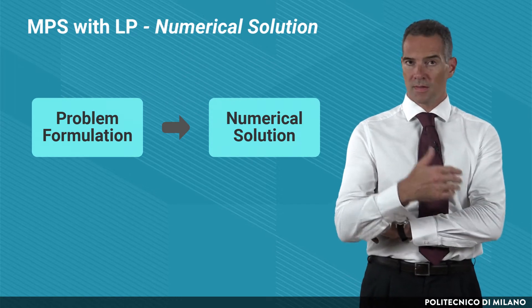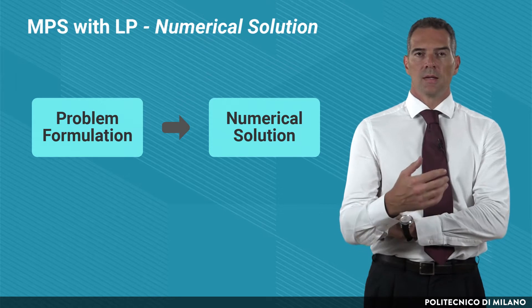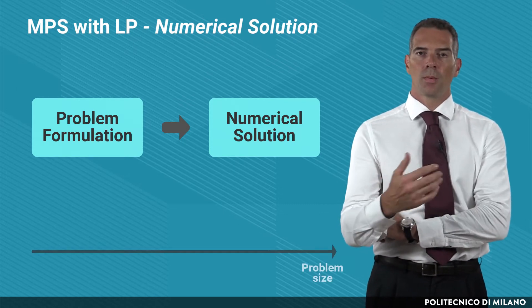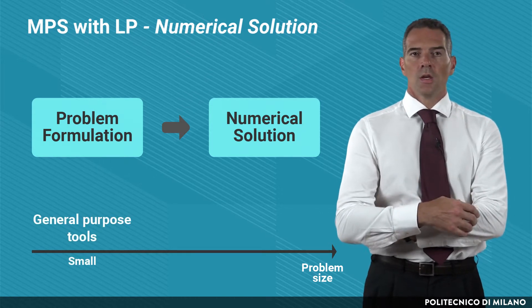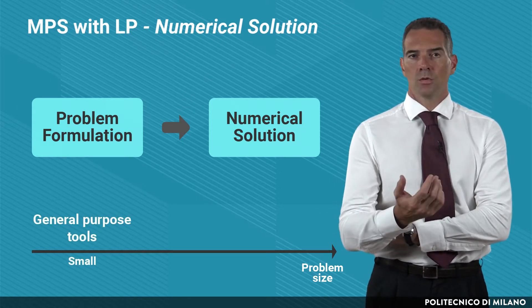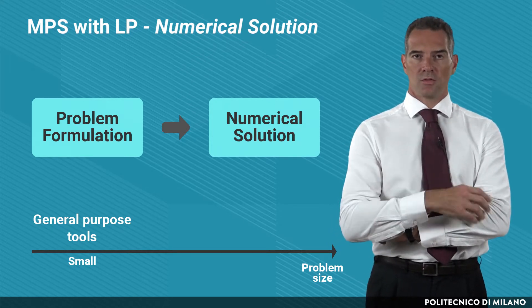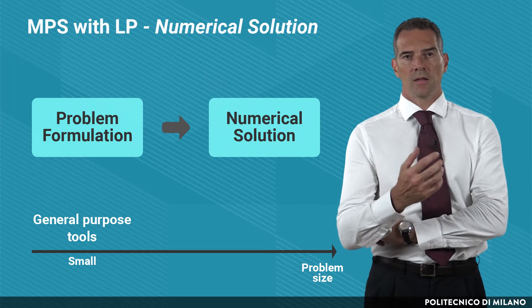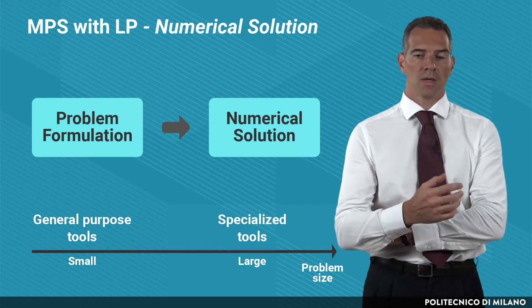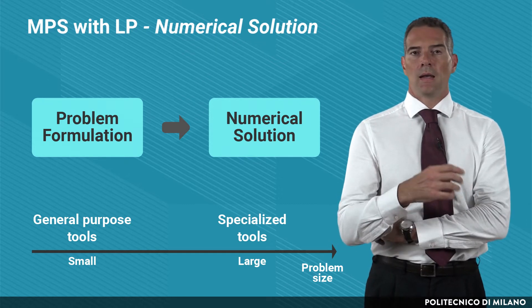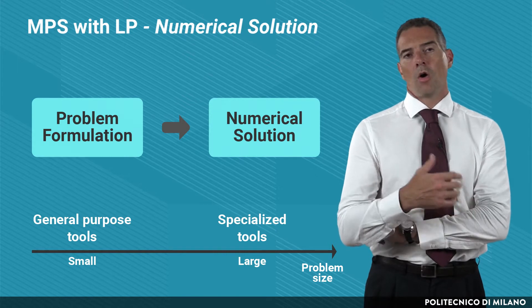Once the problem has been formulated, the subsequent step is reaching a numerical solution. This can be done in different ways depending on the problem size. For very small optimization problems, you can use general productivity tools such as a Microsoft Excel spreadsheet with embedded solvers. On the other hand, if the problem size is very large, you have to resort to specialized tools — applications or even libraries — available from commercial vendors or from open source communities.